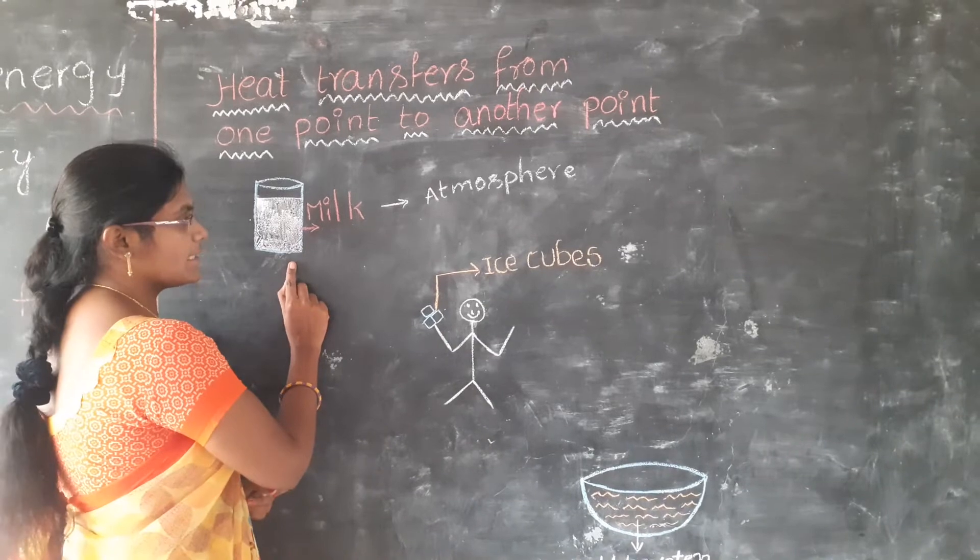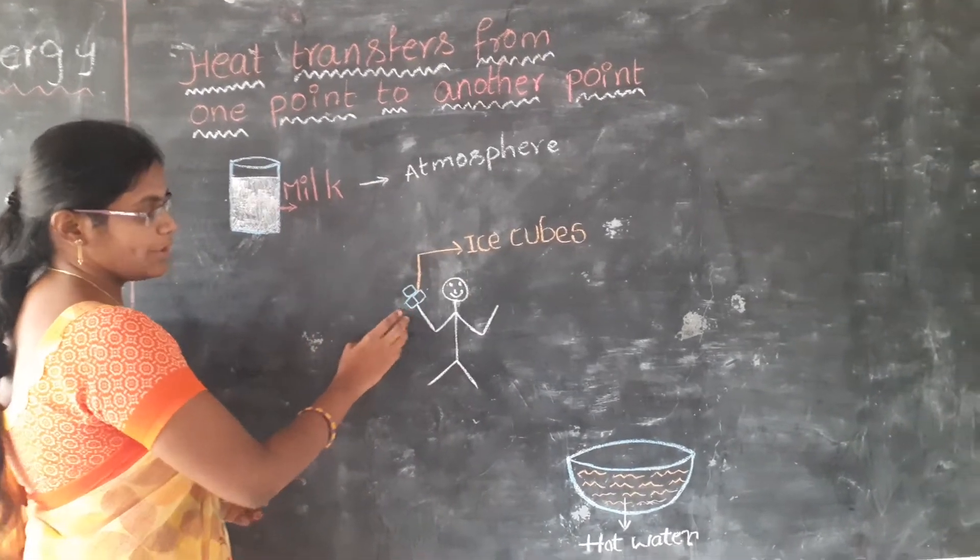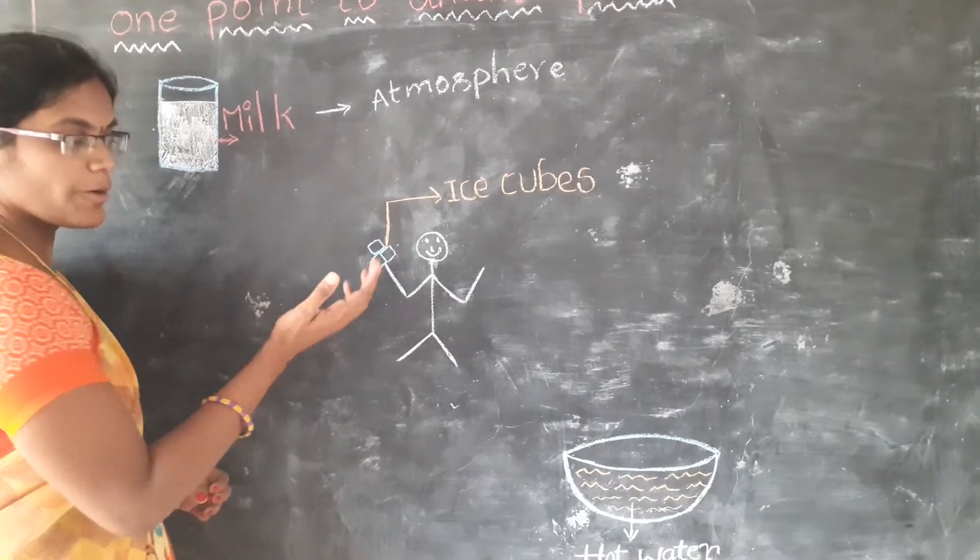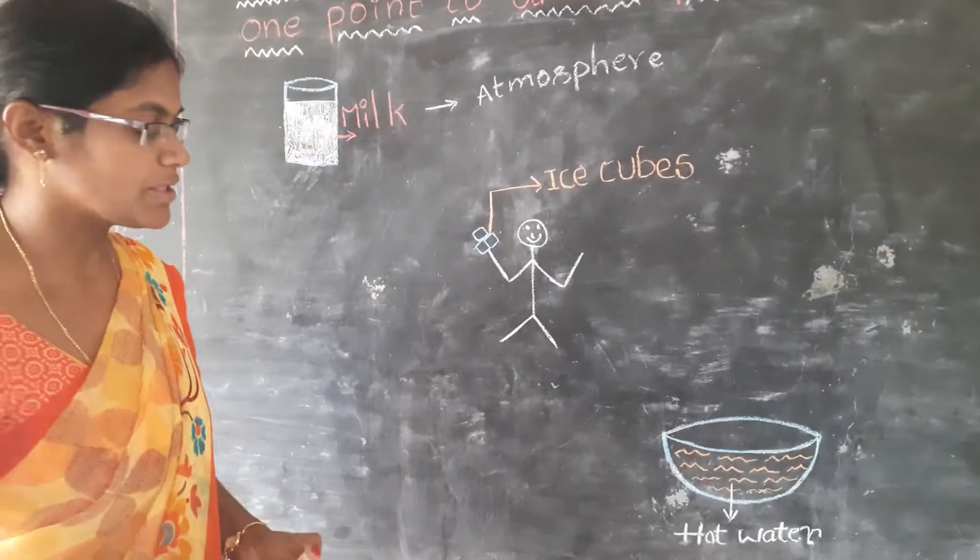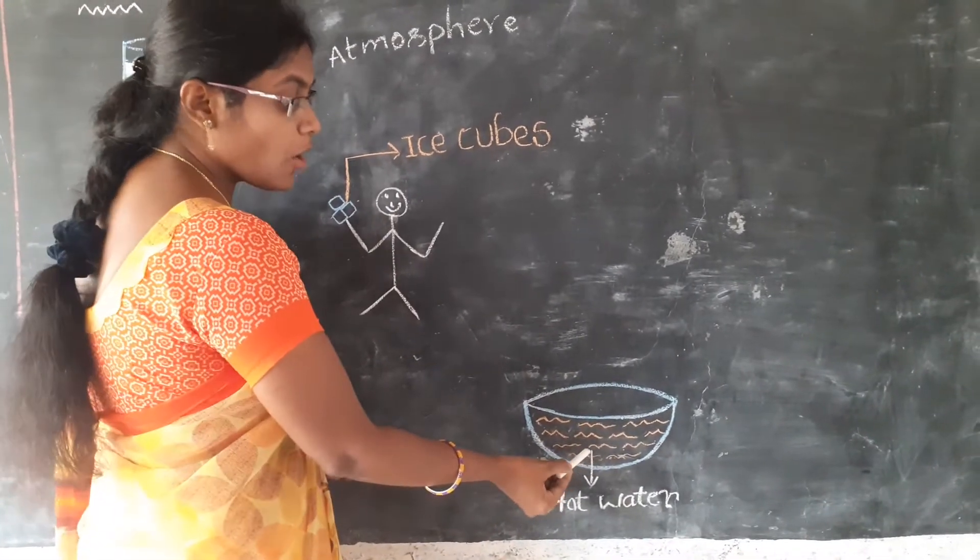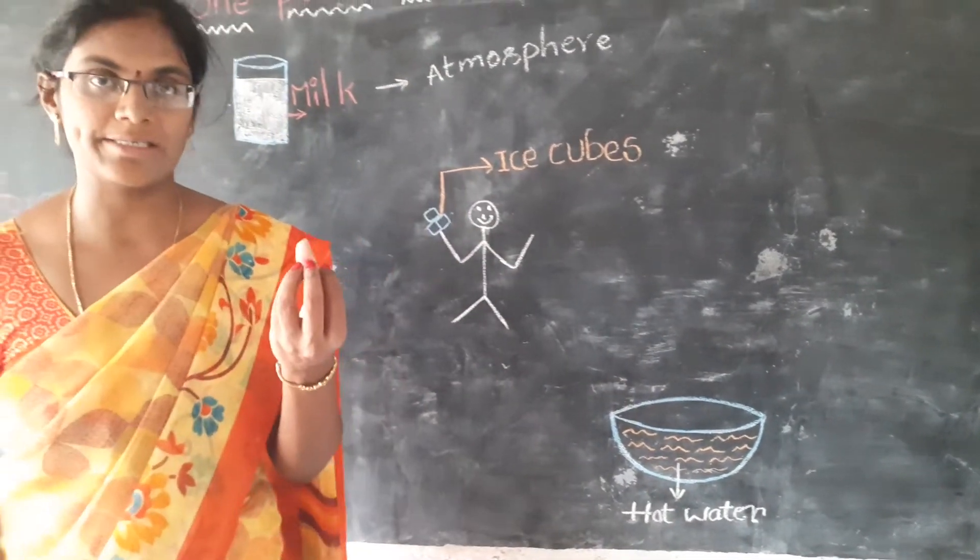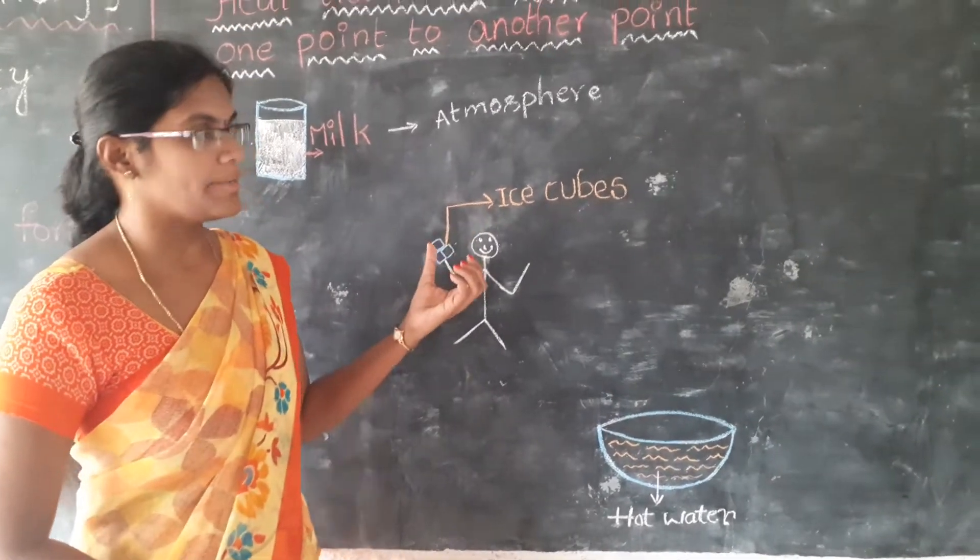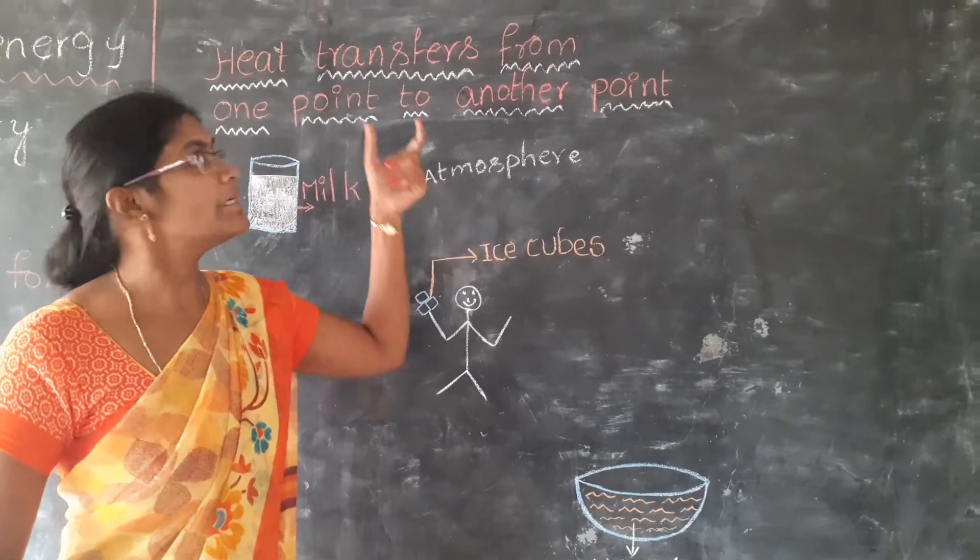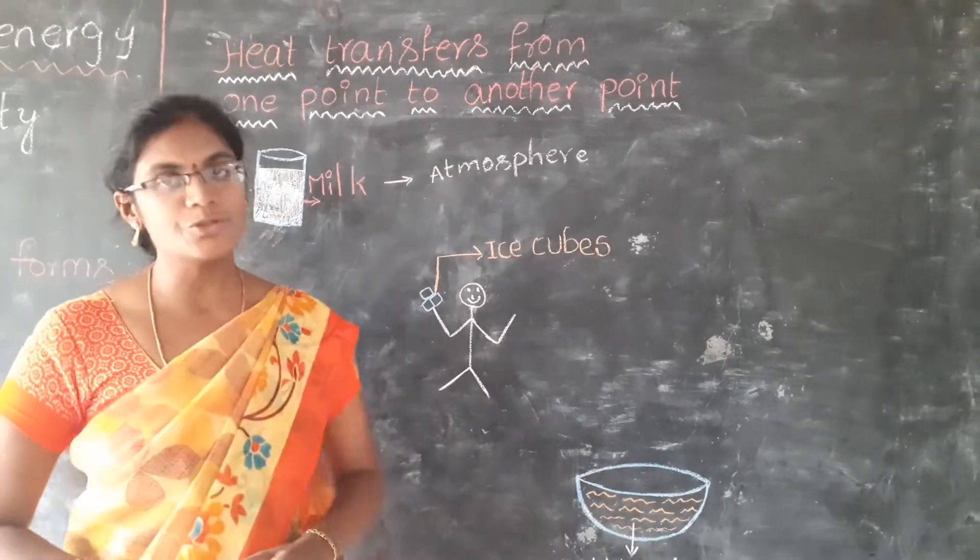Heat transfers from one point to another point. In this example, heat transfers from milk to atmosphere. And in the second case, heat transfers from our palm to ice cubes. In third case, the heat transfers from hot water to our fingers. By these examples, we are concluding that heat transfers from one point to another point.